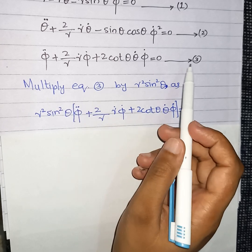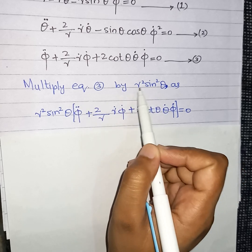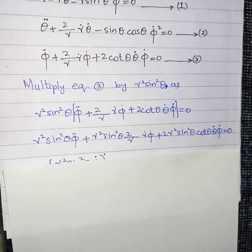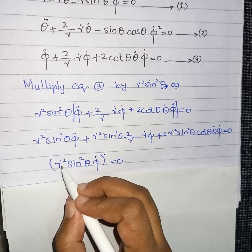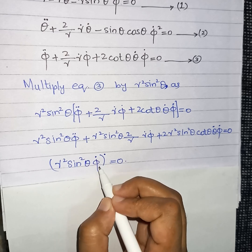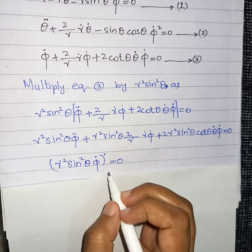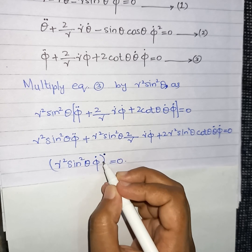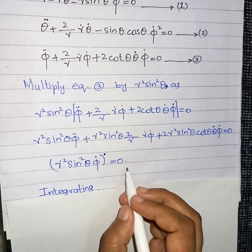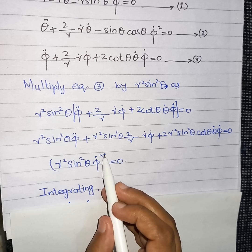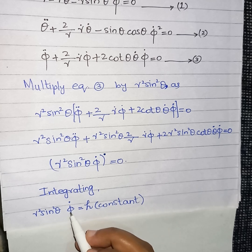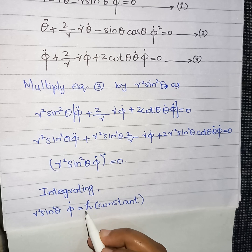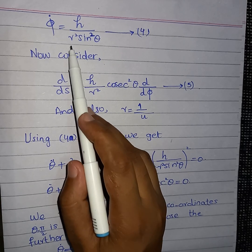First of all, we will multiply equation number 3 by R² sin²θ on both sides to get the next equation. This is the formula where if we take the derivative of the factor inside the parentheses — that is R² sin²θ φ̇ — with respect to the parameter S, we get this equation, where the dot represents the derivative with respect to S, equal to zero. Integrating both sides, the dot vanishes and we get H as the constant of integration.